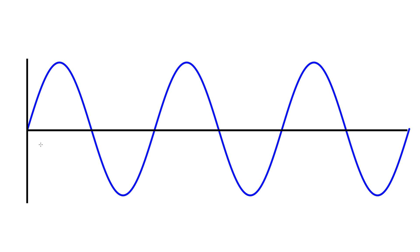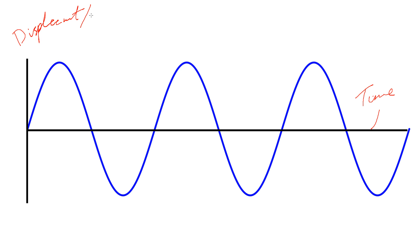We've got this wave plotted on a pair of axes, and we're going to have two different sets of axes which we'll look at separately. These axes allow us to describe the wave and identify some of its properties. On this first set of axes, the x-axis is going to be time, and along the y-axis we're going to have the displacement of the wave.